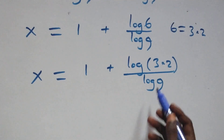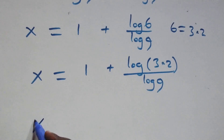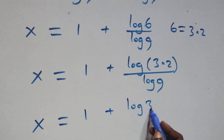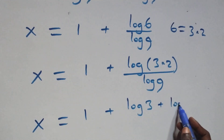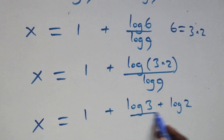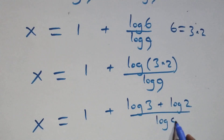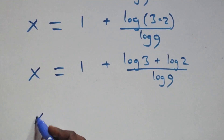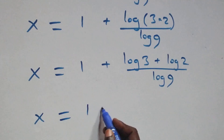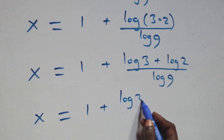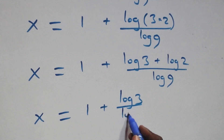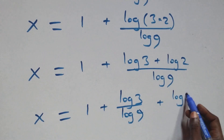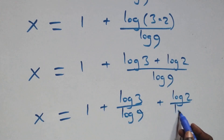Then, next step here, this also follows the law of logarithms. And we can write it as x equals to 1 plus log 3 plus log 2, all over log 9. Then here, we separate this into two fractions and we have x equals to 1 plus log 3 over log 9, plus log 2 over log 9.